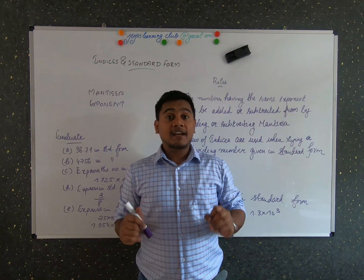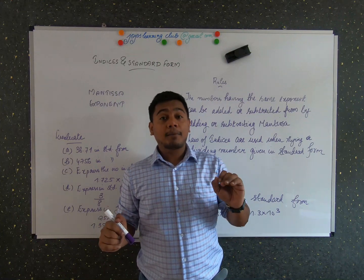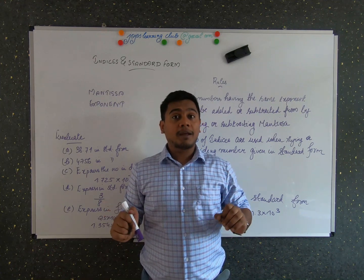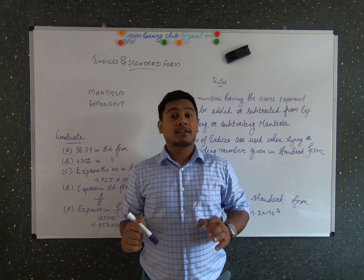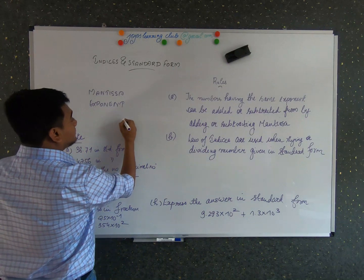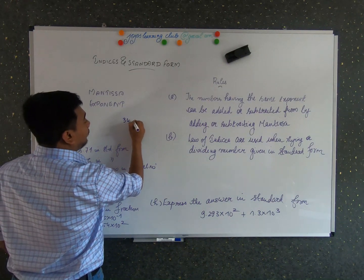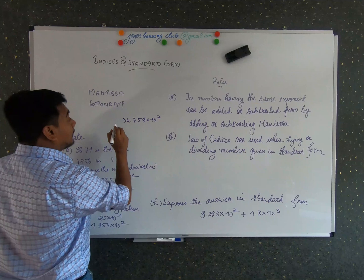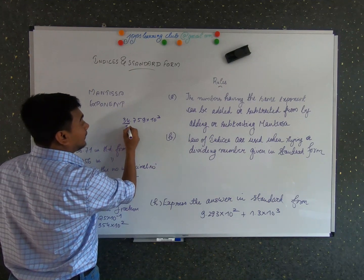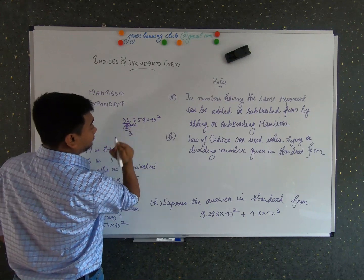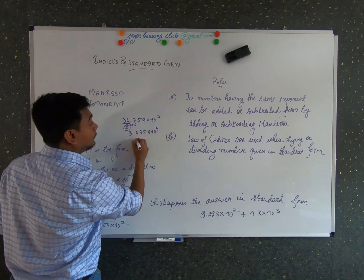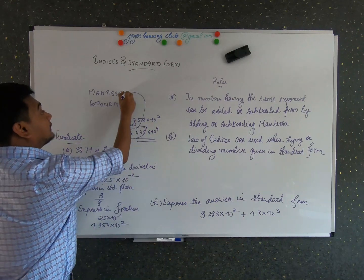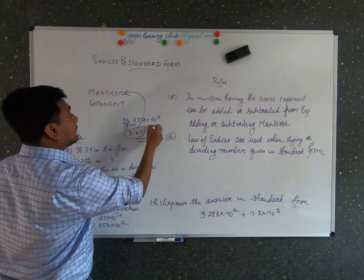Today I'll be discussing standard form. Standard form is when a number is written with one number to the left of the decimal point. Let me show with an example: 34.755 × 10³. To write this in standard form, there should be only one number to the left of the decimal point. In this expression, this factor is called the mantissa and this factor is called the exponent.